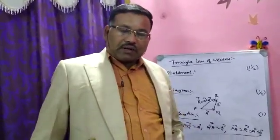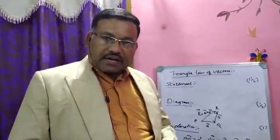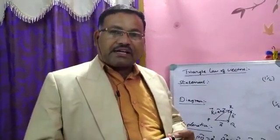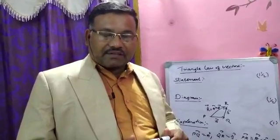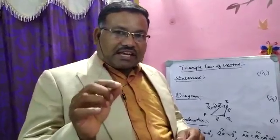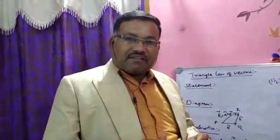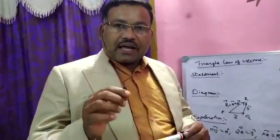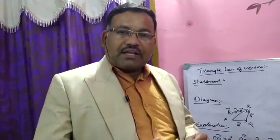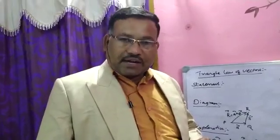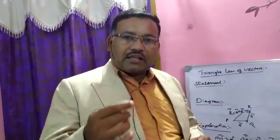We have learned the triangle of vectors. Once again the statement — please listen carefully: if two vectors are represented in magnitude and direction by the sides of a triangle taken in order, then their resultant is represented in magnitude and direction by the third side of the triangle taken in reverse order. In the statement we say 'in magnitude and direction' in two places because whenever we represent a vector, we say in magnitude and direction since a vector has both magnitude and direction. The resultant is also a vector, so we add 'in magnitude and direction' there too.